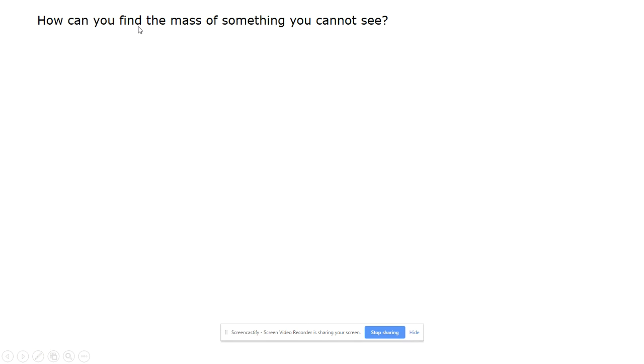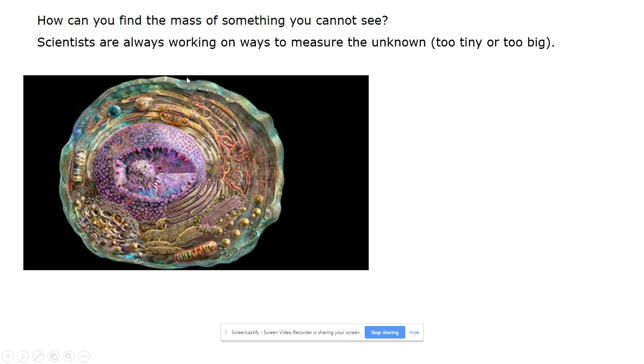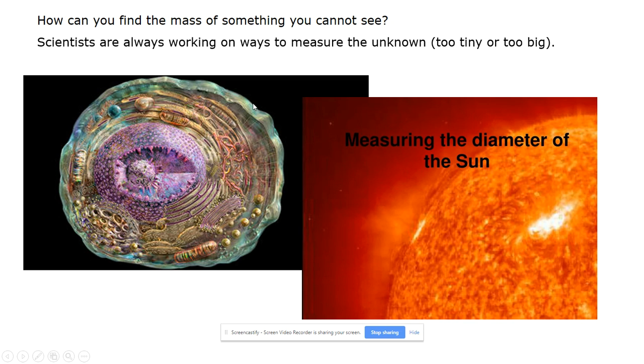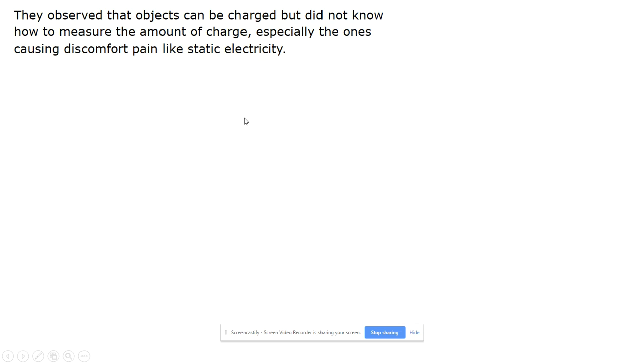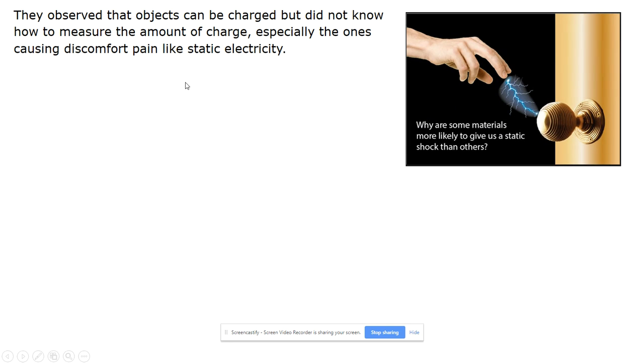Scientists have always asked the question of how do you find the mass of something you cannot see? They were always looking for ways to measure the unknown, like if something is too small, like a cell, or too big, like the sun. They observed that objects can be charged but did not know how to measure the amount of charge, especially the ones causing discomfort and pain like static electricity.